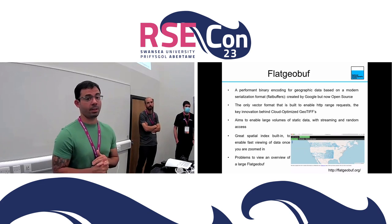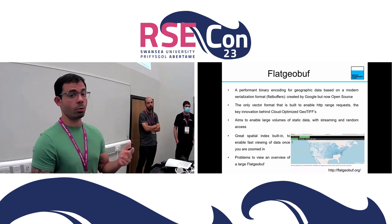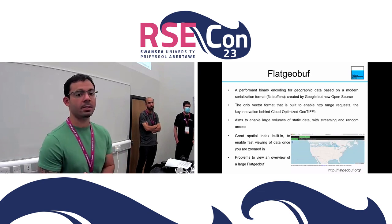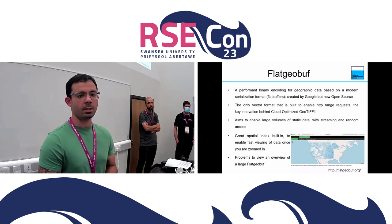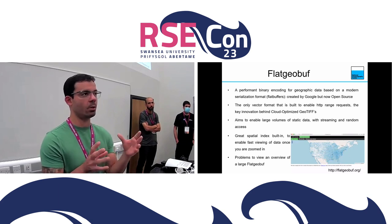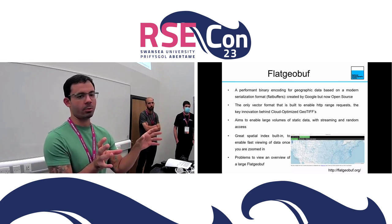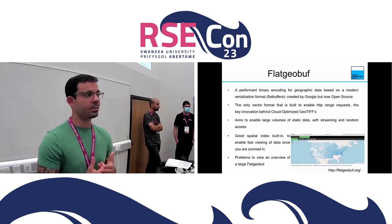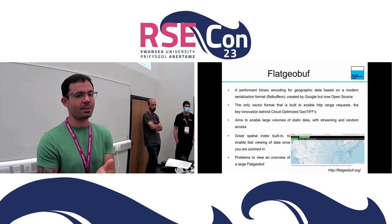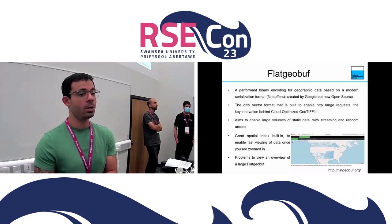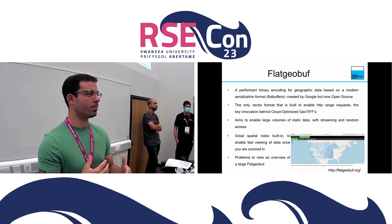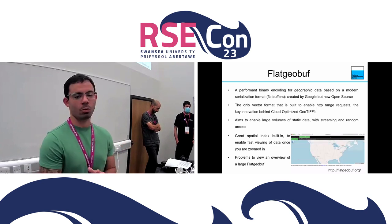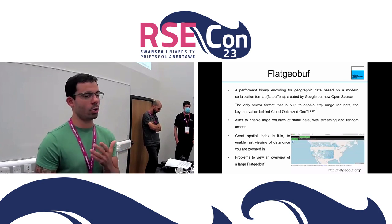FlatGeobuf is a format created by Google and is now open source. It is the only format that was built to enable HTTP range requests — it works the same way as the Cloud-Optimized GeoTIFF. It enables large-volume static data with streaming and random access, which is wonderful if you want to see maps in a zoomed-in view. However, it has problems handling large overviews and takes a long time to render. That's why in this project we chose not to use FlatGeobuf.